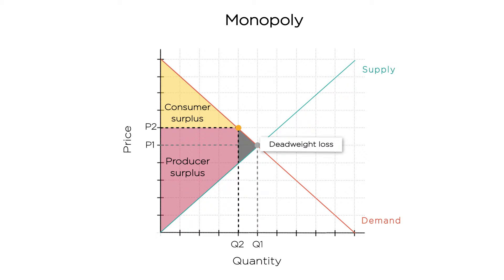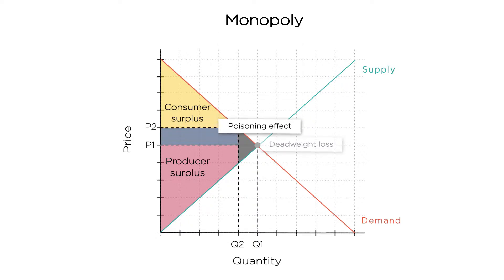This deadweight loss exists because there are units on which the monopolist could make money and the consumers would value, but which don't get sold. Why not? Because to sell them, the monopolist would have to lower the price for all units and poison his previous sales. Making those trades would lower the amount that the monopolist could make on everyone else. The welfare loss for monopoly arises because monopolists have to charge one price to everyone. A monopolist won't lower his price, even if it means making a positive profit on the next sale, because he would lose money on all his existing sales.